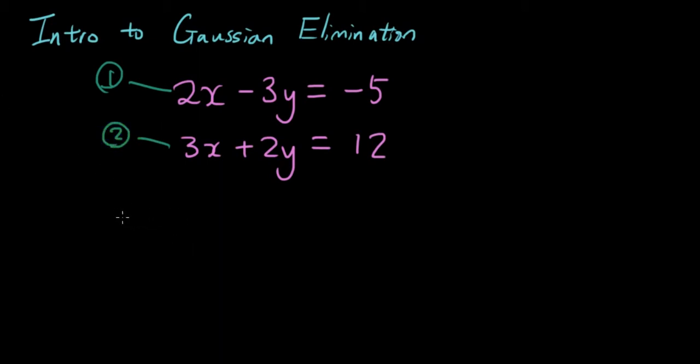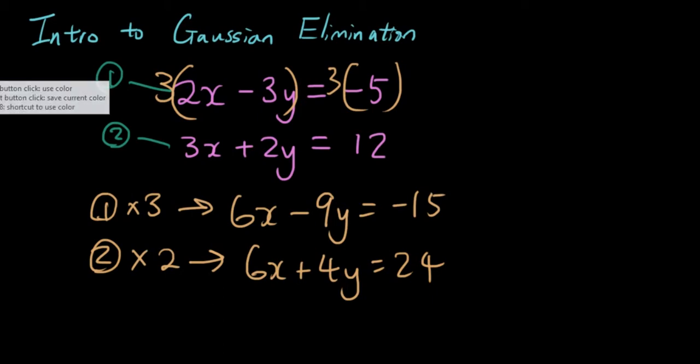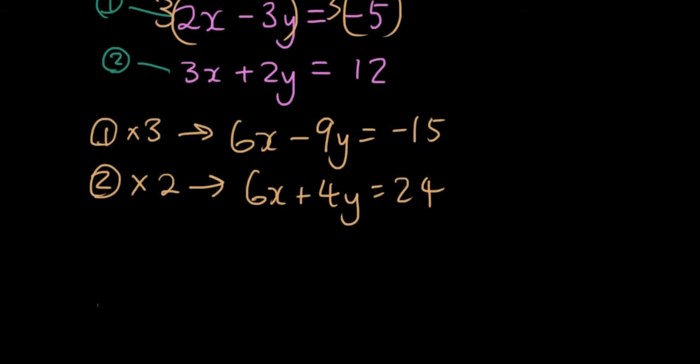And let's go equation 1 multiplied by 3. And what that means is I multiply by 3 on both sides of the equal sign. So I will get 6x minus 9y equals negative 15. And if I go equation 2 multiplied by 2, I will get 6x plus 4y equals 24. And then what I'm going to do is I'm going to do equation 1 by 3 minus equation 2 by 2.